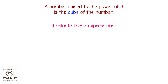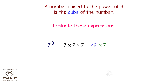Evaluate these expressions. 7 cube is equal to 7 into 7 into 7. So first, 7 into 7 is equal to 49, and 49 into 7 is equal to 343. Thus, 7 cube is equal to 343.